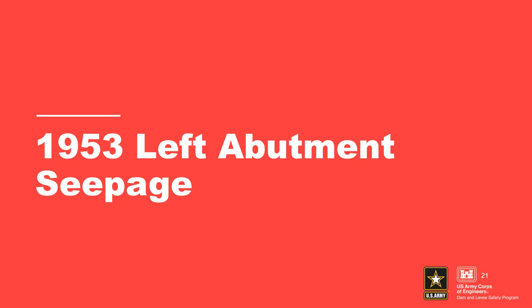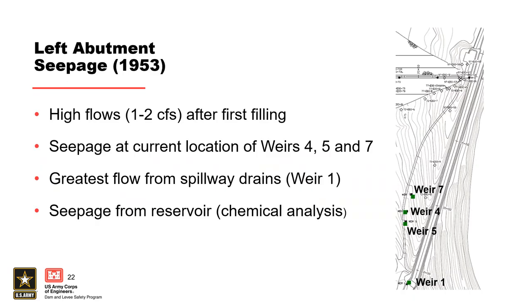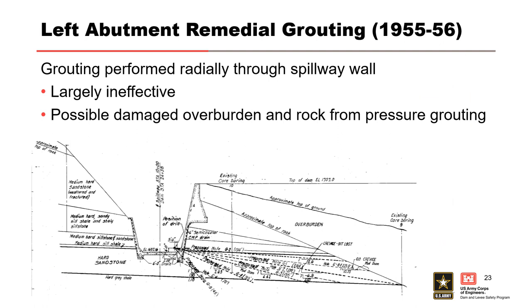The first seepage issue occurred at the dam in 1953 at the left abutment. After first filling, very high seepage flows were observed in the left abutment fractured bedrock near the spillway channel. Weirs were constructed to monitor flows ranging from 1 to 2 CFS, and chemical analysis confirmed the seepage was coming from the reservoir. A grouting program was performed a couple years later using angled borings from the spillway to target the fractured rock zone found to be the primary seepage path. Although it was determined that the grouting was largely ineffective, no other remediation was performed.